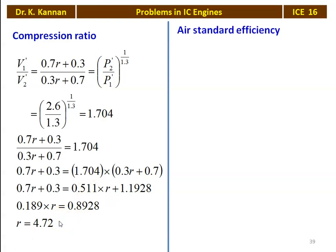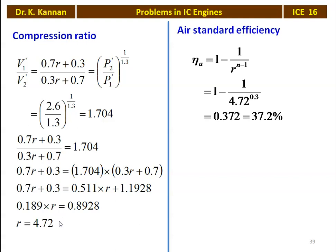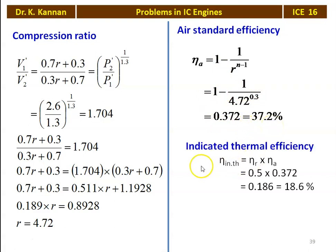We calculate the air standard efficiency: η_A = 1 − 1/(R^(n−1)) = 1 − 1/(4.72^0.3) = 0.372, which is 37.2%. The indicator thermal efficiency equals relative efficiency × air standard efficiency = 0.5 × 0.372 = 0.186, which is 18.6%.